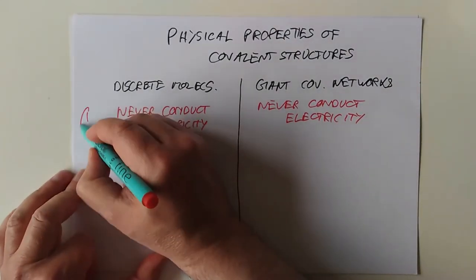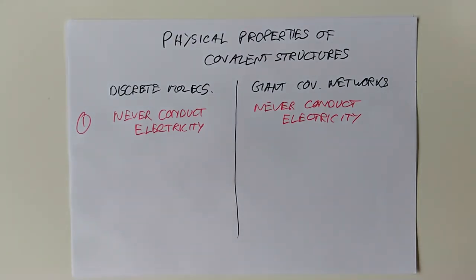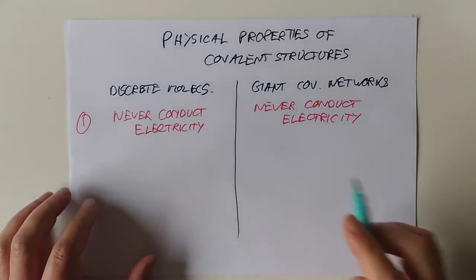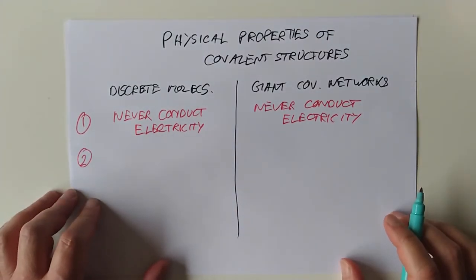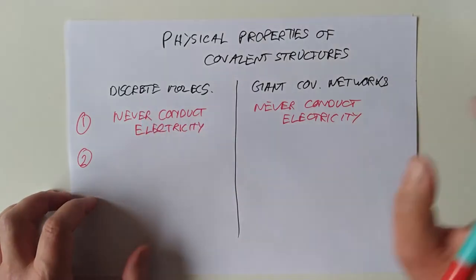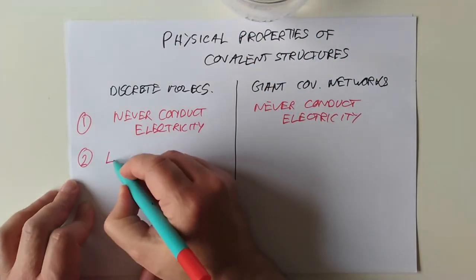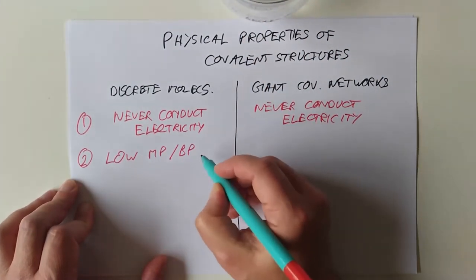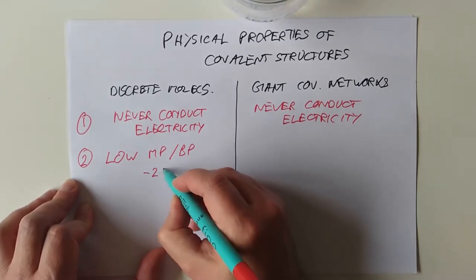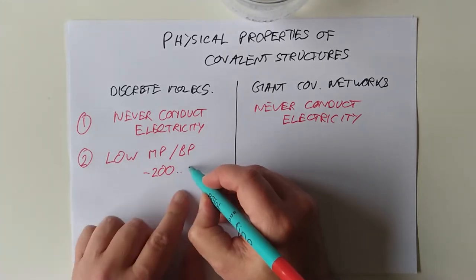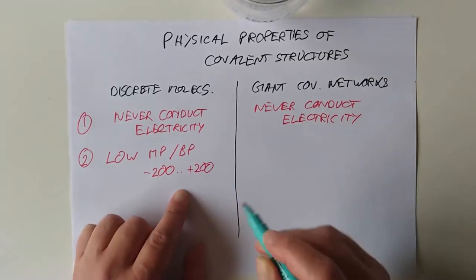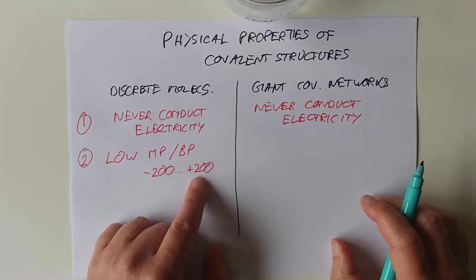Property number two. They want you to look at the melting and boiling points. So discrete molecules like water or oxygen gas. The oxygen gas you're breathing is a discrete molecule as well. They tend to have low melting and boiling points. They can be seriously low. Like minus a couple of hundred up to a couple of hundred positive, depending on what you're dealing with. That might not seem low to you. Wait till you get to these guys.